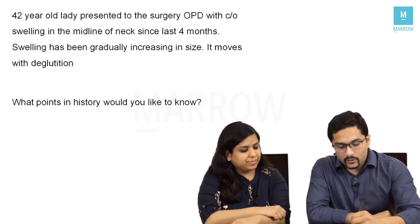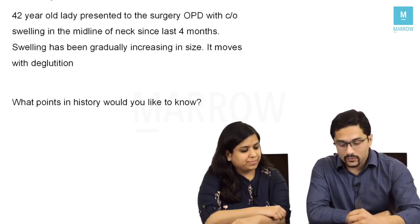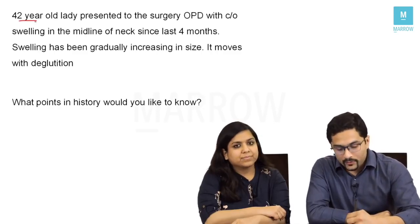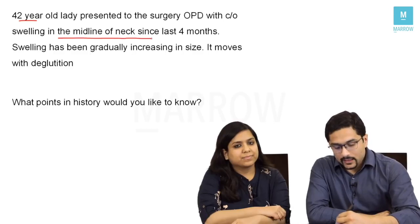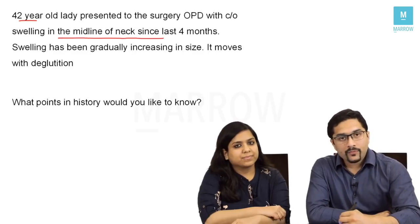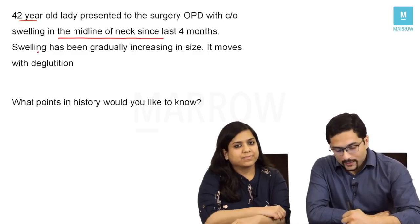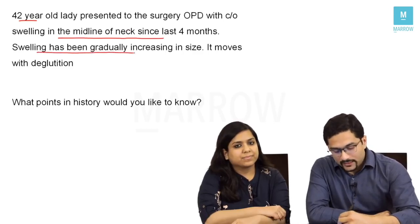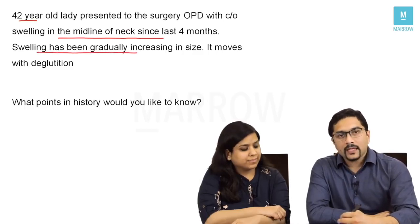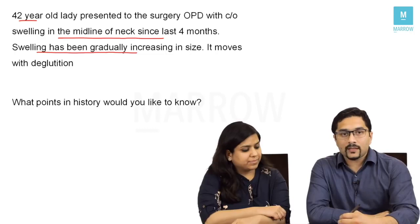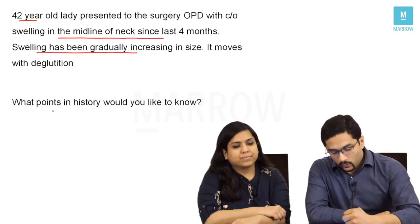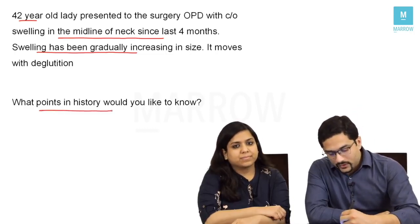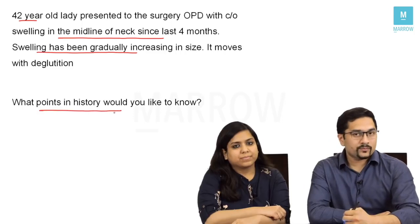We have a 42-year-old lady who has come to the OPD with a swelling in the midline of the neck since the last four months. The swelling has been gradually increasing in size and she says that it moves up and down when she swallows. What points in the history would you like to know?